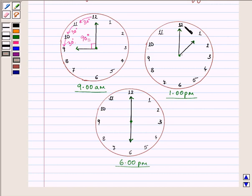Similarly, in the second clock it has moved only one number, so it will be 30 degrees. In the third clock, it has moved six places. Each time there was a 30-degree move, so the angle equals 180 degrees.